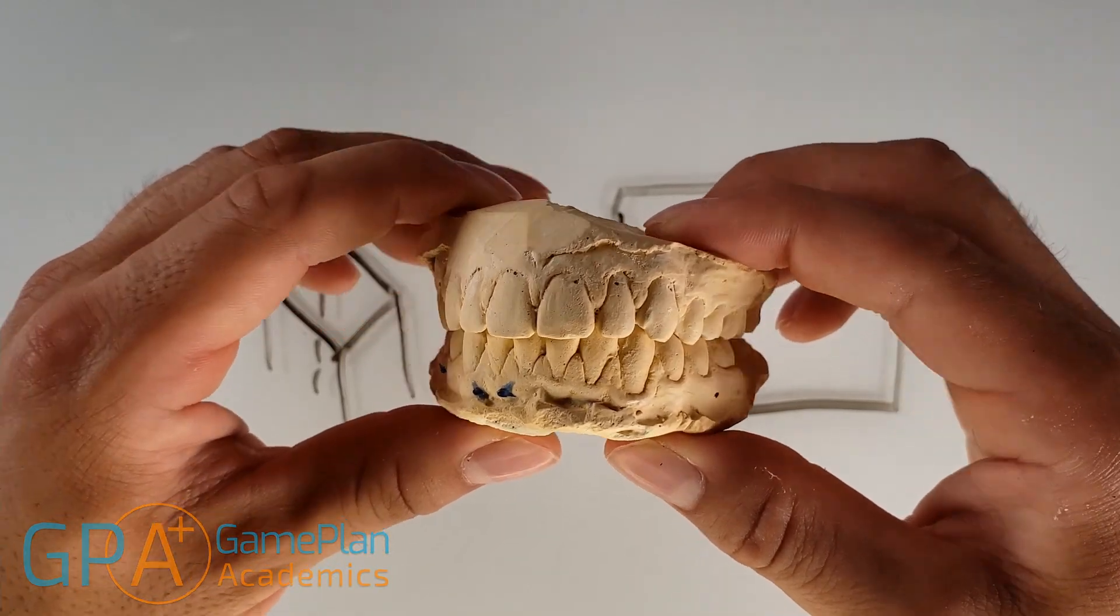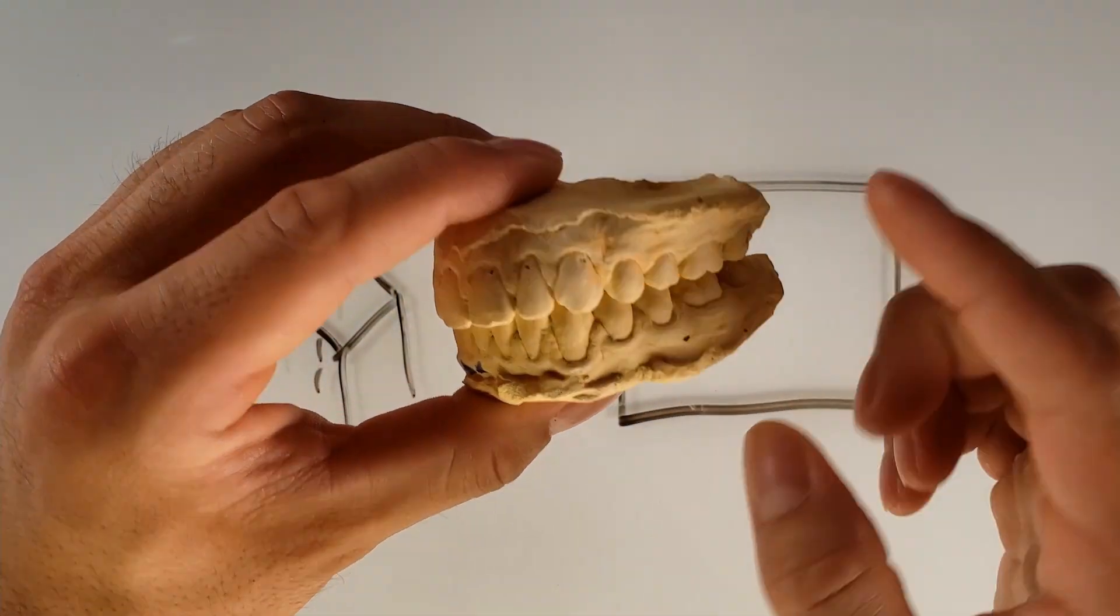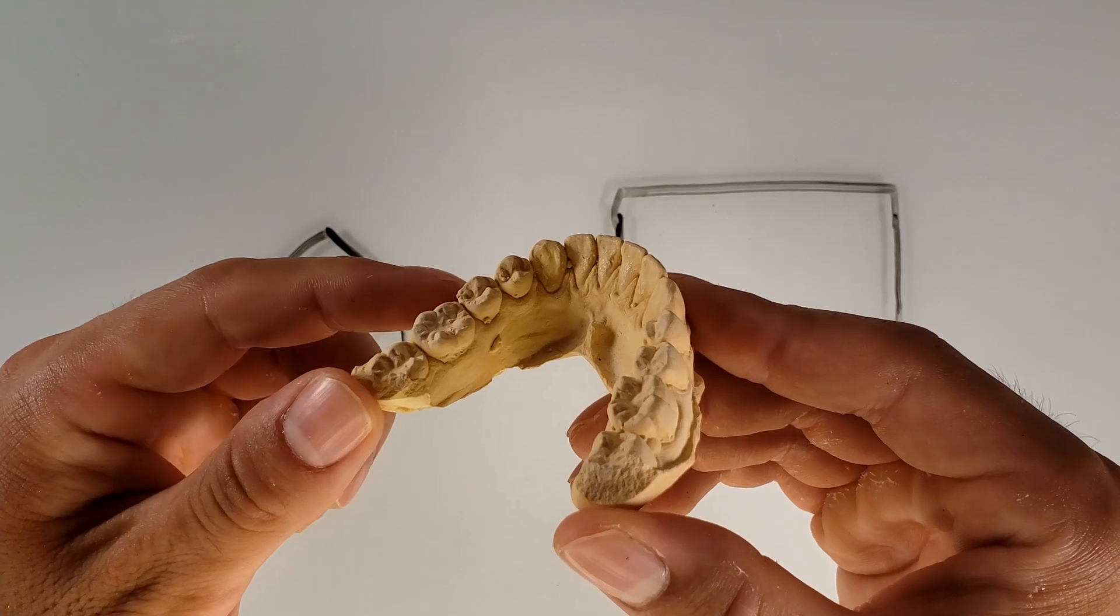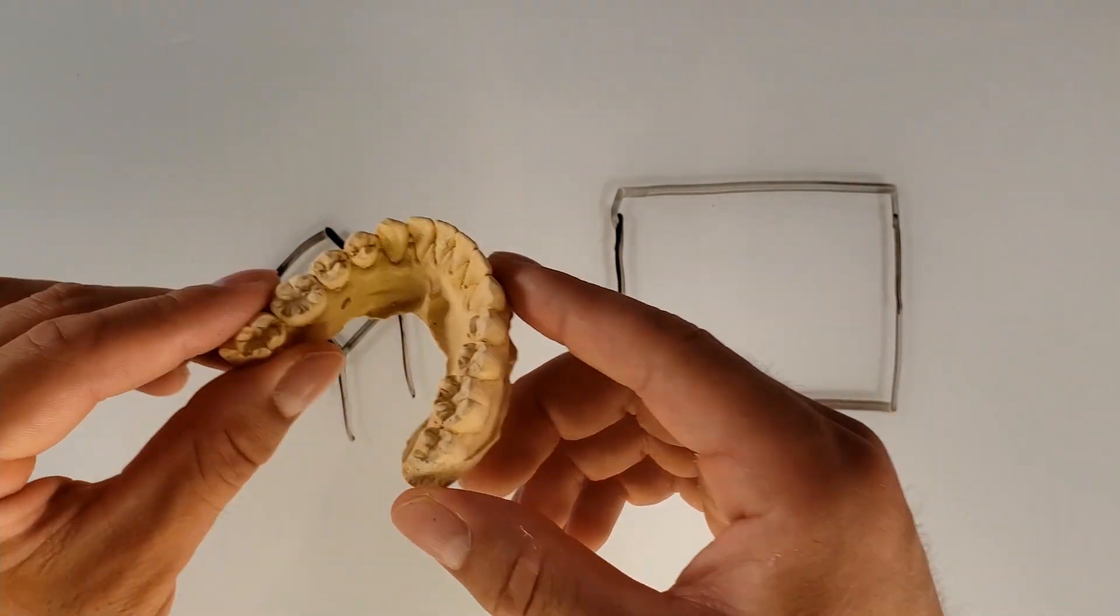Let's talk about the cusps and ridges of the premolars. They're right behind the canines. This is the mandible from your perspective, the lower jaw, and then this is the first premolar. We're going to be referring to this one for the video.